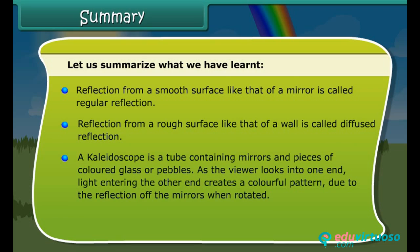A kaleidoscope is a tube containing mirrors and pieces of colored glass or pebbles. As the viewer looks into one end, light entering the other end creates a colorful pattern due to the reflection of the mirrors when rotated.